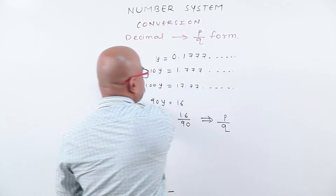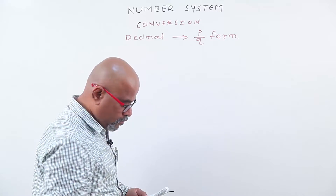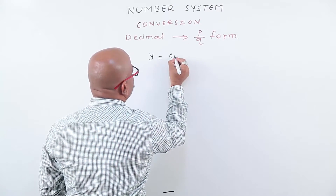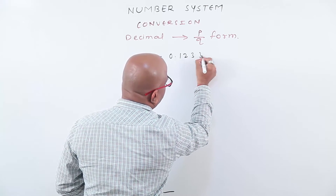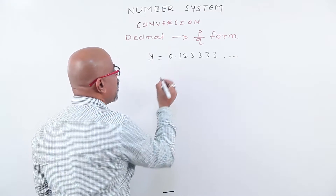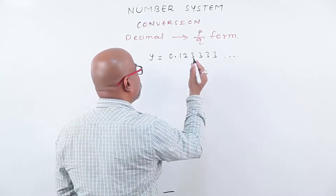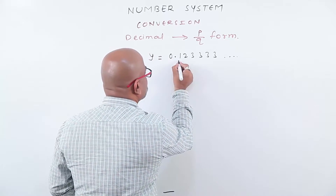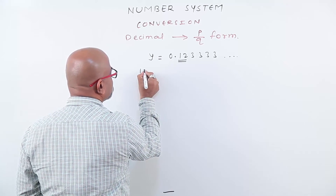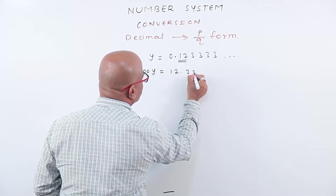One more example. y equals to 0.123333 and so on. Here we observe that after decimal, there are two numbers which are non-recurring, and from the third number we get recurring numbers. That means the first two are non-recurring numbers. Therefore, multiply this first equation by 100. We get 100y equals to 12.3333.